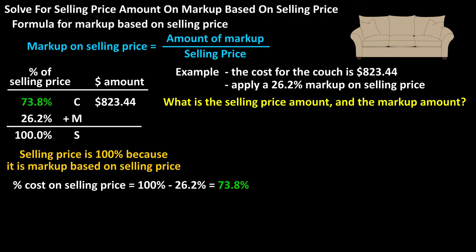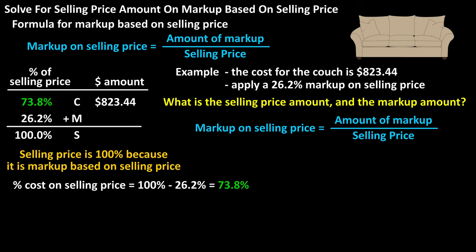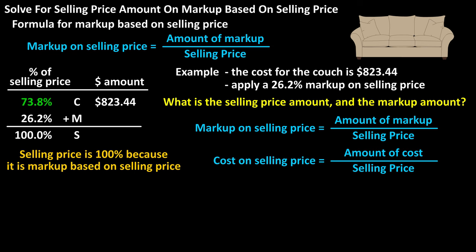Now we can take our formula — markup on selling price equals the amount of markup divided by the selling price — and use it for cost rather than markup to solve for selling price. So we have: cost on selling price equals the amount of cost divided by the selling price. Plugging into the formula, we have 73.8% equals $823.44 divided by s, the selling price.